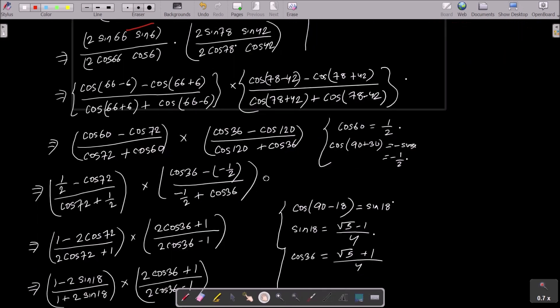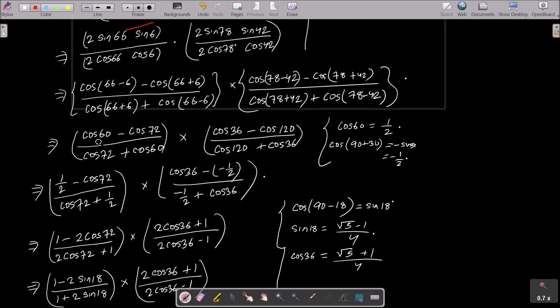And after that, here you need to put the value. So cos(60°) equals 1/2, and cos(120°). Here cos(120°) we can write as 90° plus 30°, and cos(90° + θ) equals -sin(θ), so that becomes -sin(30°). Okay, and the value of sin(30°) is 1/2, so I have put the value -1/2.